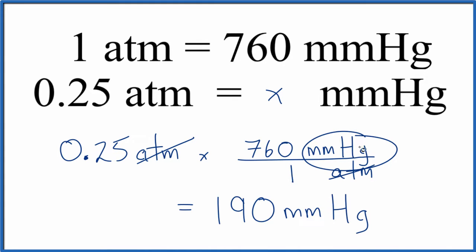Teachers like this because you're left with this millimeters of mercury here. You've crossed out the atmospheres. You know you did it correctly because you have the right units. But either way, 0.25 atmospheres is equal to 190 millimeters of mercury.